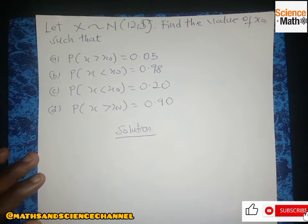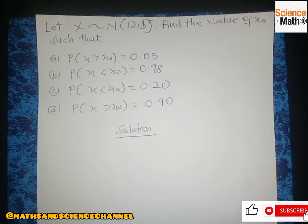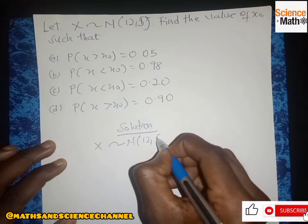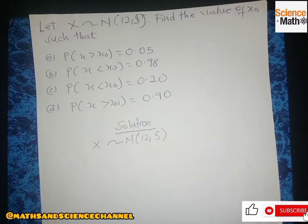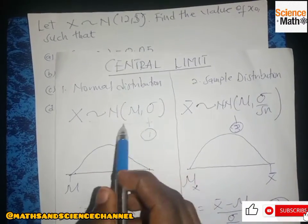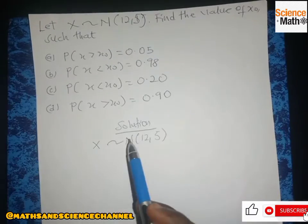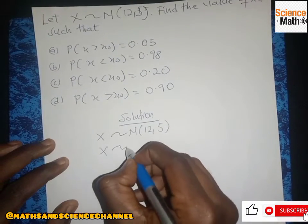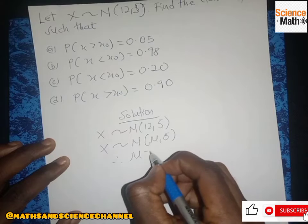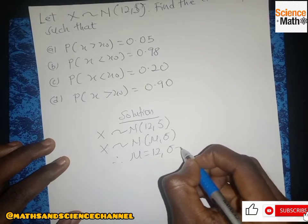The question is that we should find the value of s-naught given certain probabilities. We are solving the inverse normal distribution. Since S follows a normal distribution with parameters 12 and 5, comparing to the normal distribution formula, we conclude that mu is 12 and the standard deviation is 5.